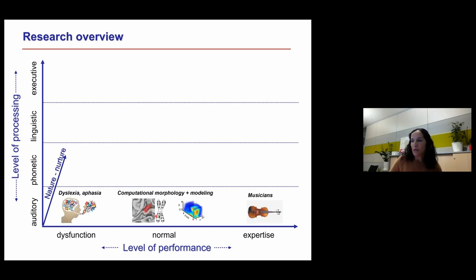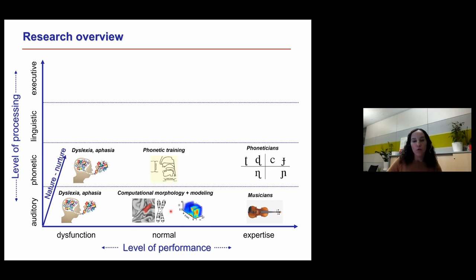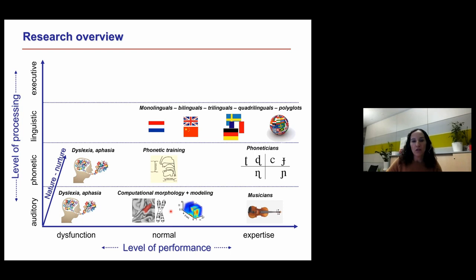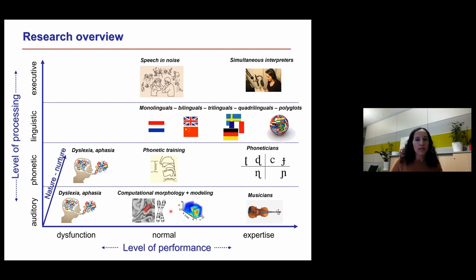Our work includes work on auditory processing and auditory cortex function and structure. We also do work on phonetic processing and training, both in perception and production. We're also interested in bi- and multilingualism — increasingly multilingualism, because depending on how you define it, a lot of people globally can communicate in more than two languages. Finally, we're interested in top-down influences on effortful speech processing and executive resources modified by expertise training, for example in simultaneous interpreters.